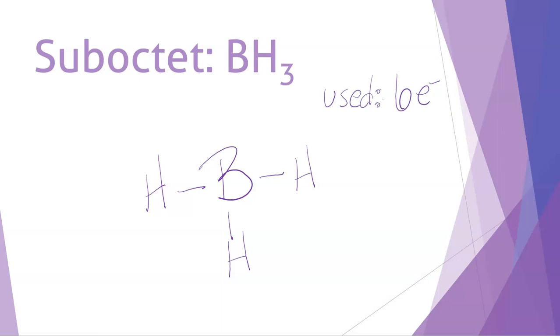If we count up how many electrons we have available, boron is in group 3A, so it starts off with three. We have three hydrogen atoms, and each of those has one valence electron. So we have six electrons in total. That means we're done. We don't have an extra pair of electrons to put a lone pair on our boron atom. And so the boron is just going to hang out with its six electrons.